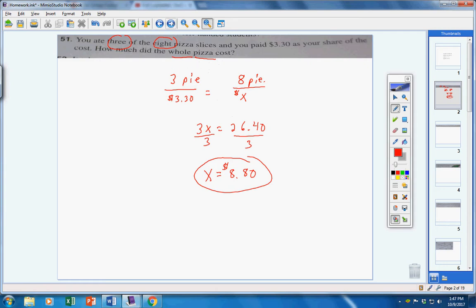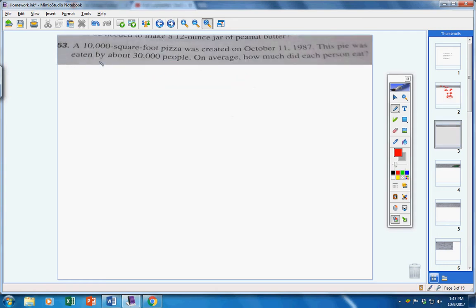Moving on to number 53, a 10,000 square foot pizza was created on October 11, 1987. This pie was eaten by 30,000 people. On the average, how much did each person eat? No problem. Take the total square footage and divide it by 30,000 people.